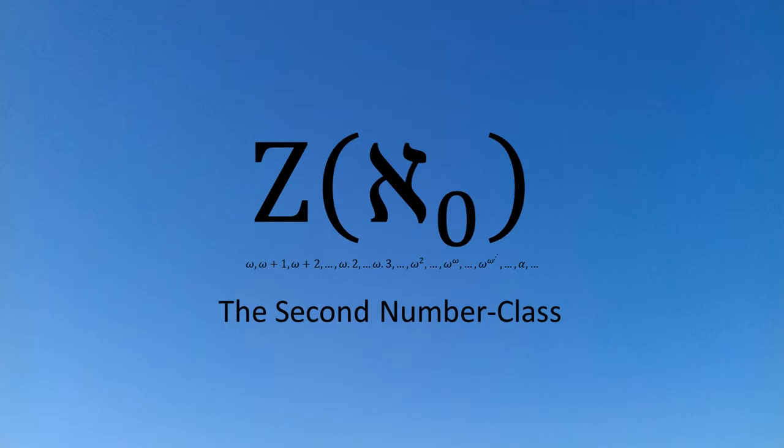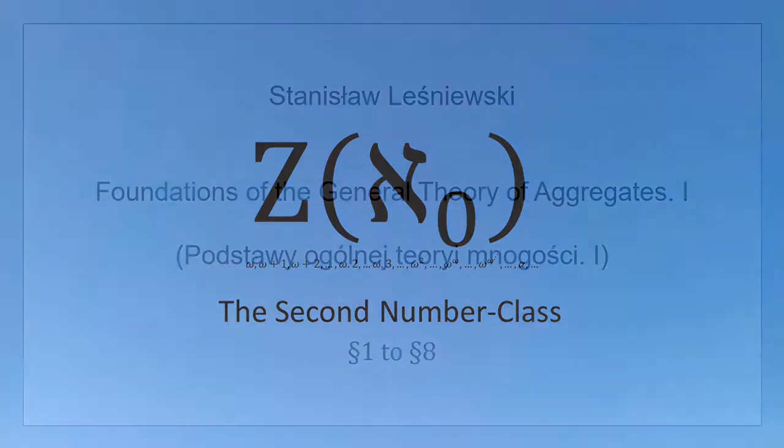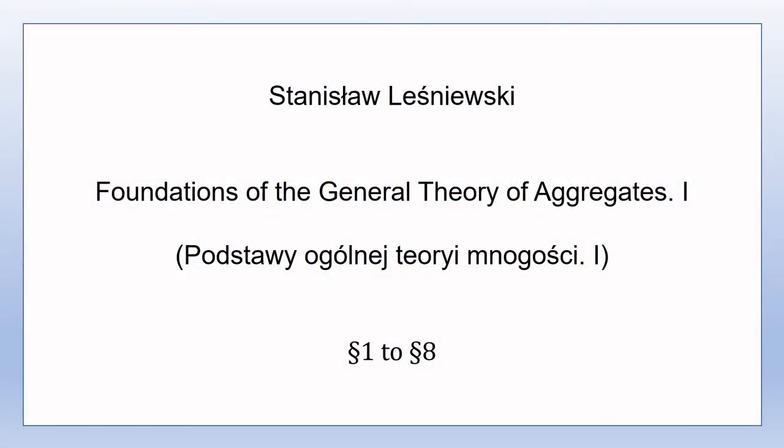Welcome to this video. I'll be presenting part of my translation into English of one of the early works of the Polish logician Stanisław Leśniewski. The original title of the work in Polish was Podstawy ogólnej teorii mnogości, which I've translated into English as the foundations of the general theory of aggregates. I'll just start off this video with some remarks on my translation.